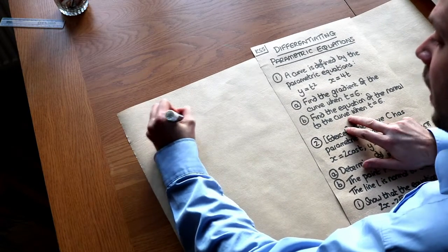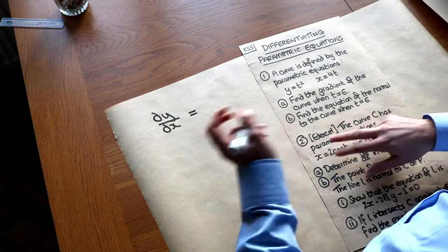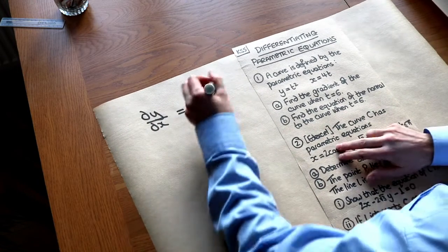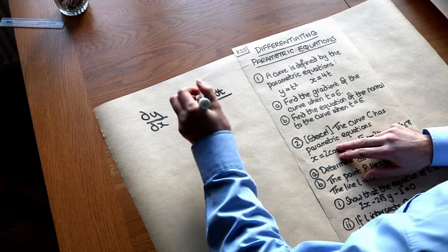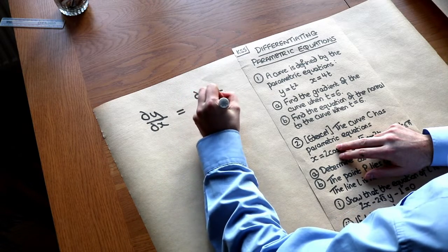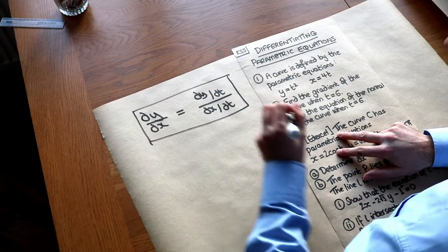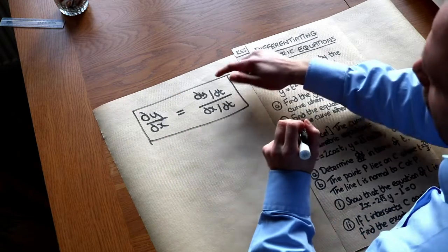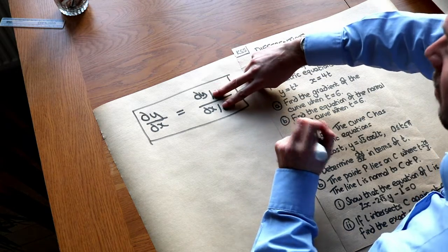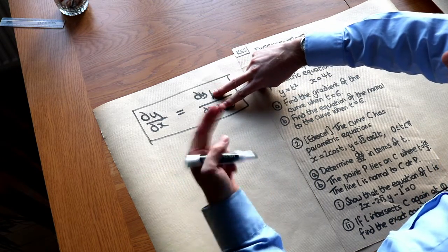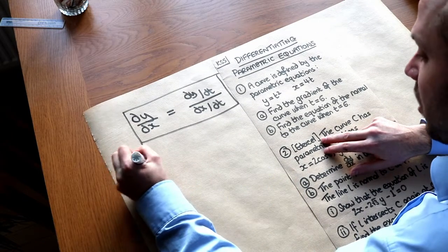There's only one thing you need to know for this video. If you want to find the gradient function dy over dx, you just do dy over dt — whatever your parameter is — over dx over dt. That's the only formula you need to remember. If you had this fraction and multiplied both top and bottom by dt, those would cancel and you would get dy over dx. That's a good way of remembering it. So let's apply that to the first question.